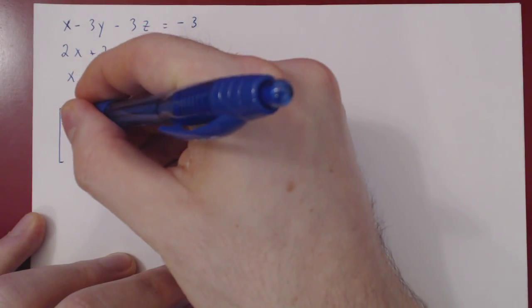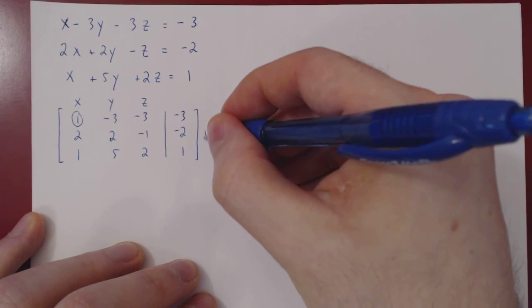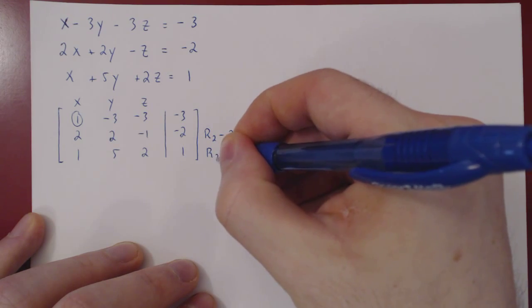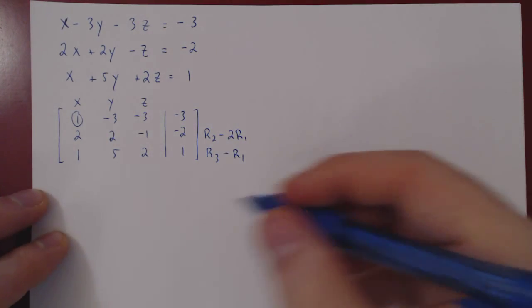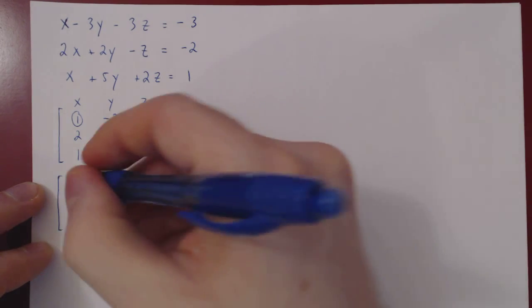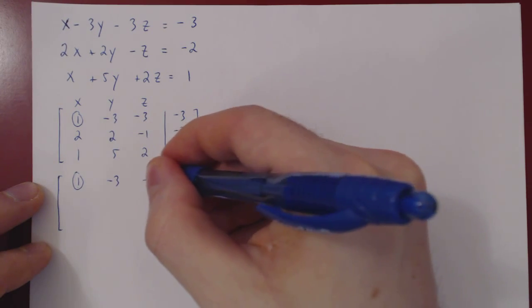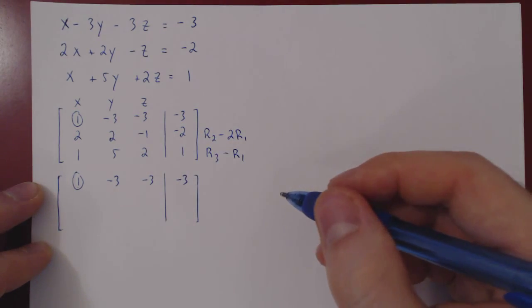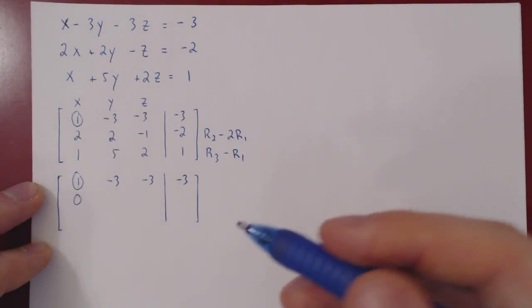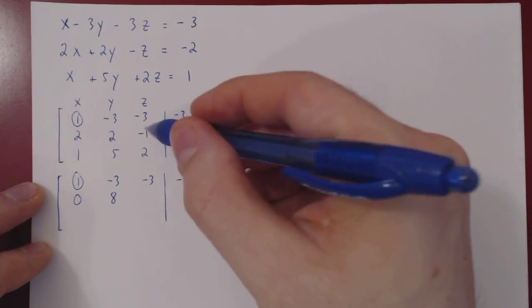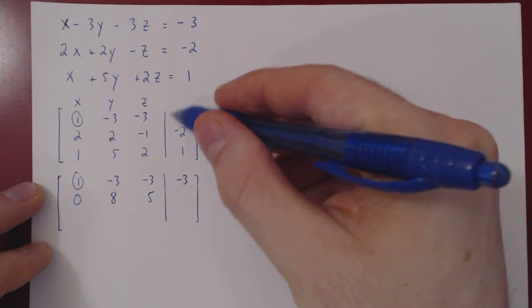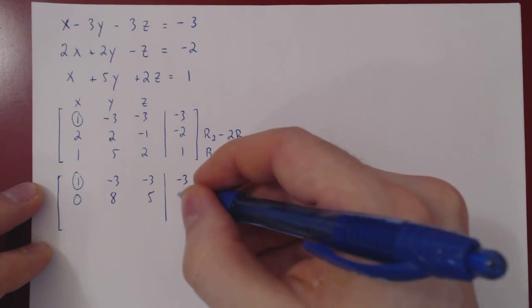We already have a leading one in the leftmost column top row, so we can kill the entries below it. So we do row 2 minus 2 row 1, and row 3 minus row 1. We first recopy row 1 as we're not changing it. Apply the first row operation, so 2 minus 2, 0. 2 minus 2 times negative 3 is 2 plus 6, positive 8. Negative 1 minus 2 times negative 3 is positive 6, 5. Same thing here, 6 minus 4, 6 minus 2, 4.